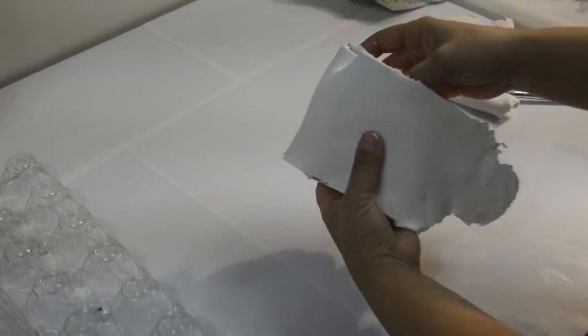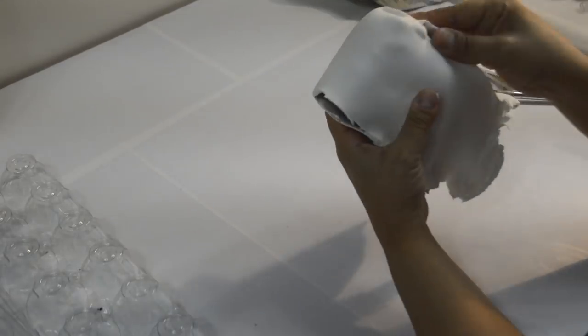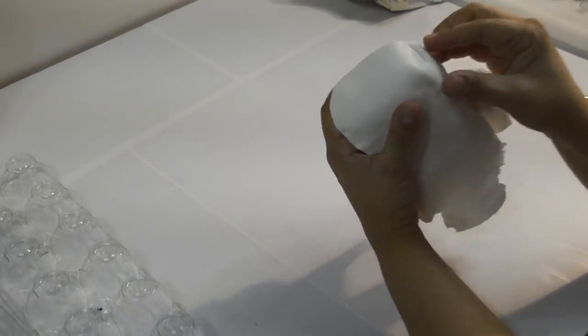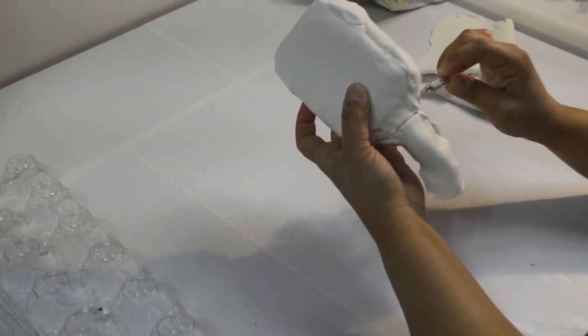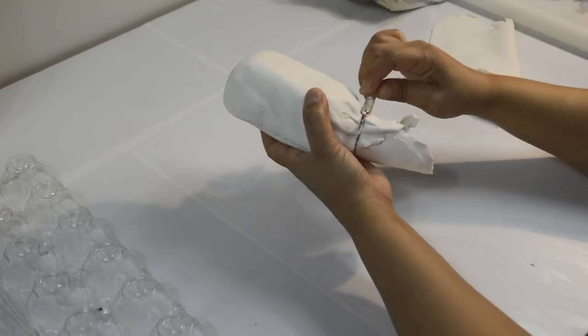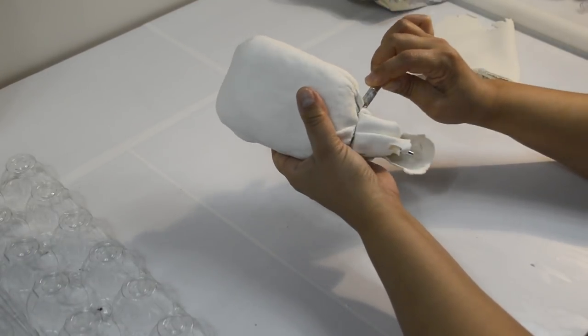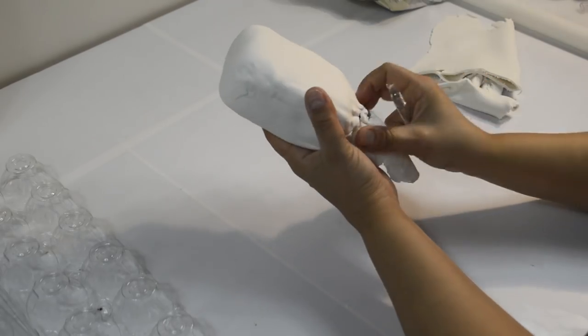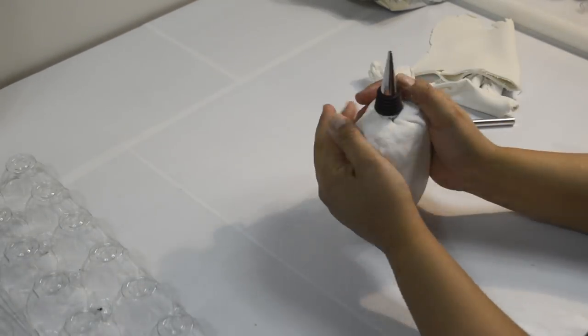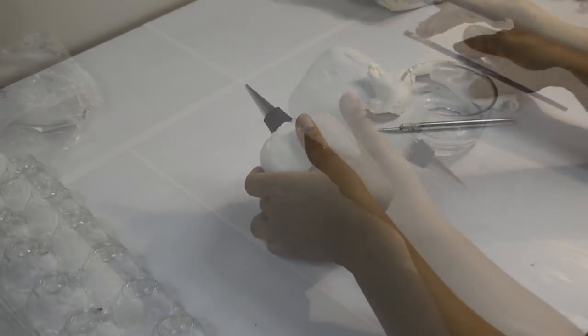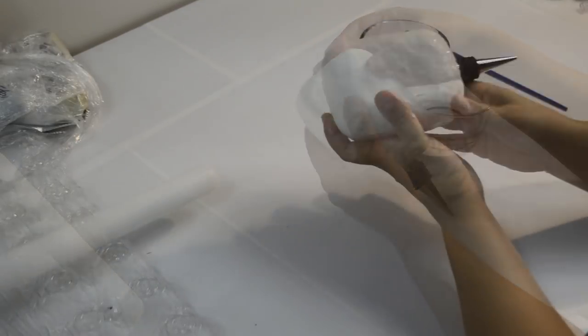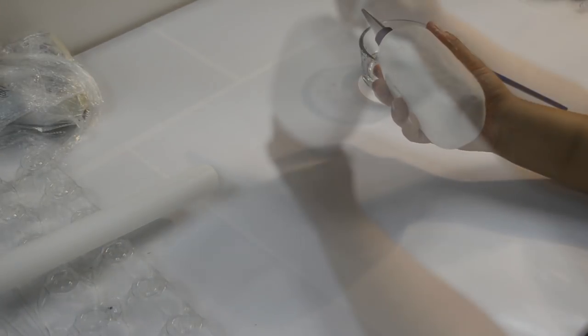Next, mold the clay over the microphone the best you can, smoothing it out as you go. Trim off any excess clay. Take some water and smooth it out as best as you can. Sorry about this clip, I didn't realize it was out of focus.